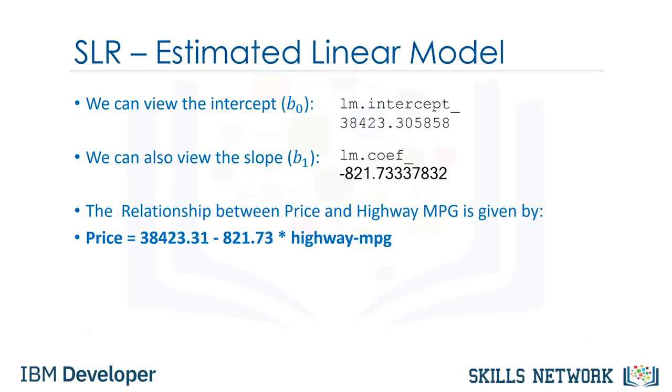The relationship between price and highway miles per gallon is given by this equation in bold. Price equals 38,423.31 minus 821.73 times highway miles per gallon, like the equation we discussed before.